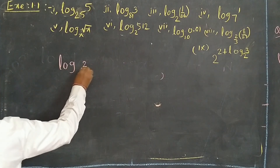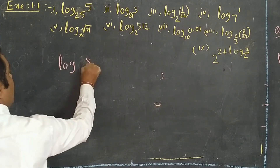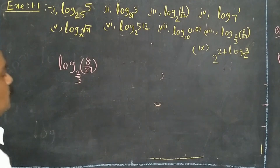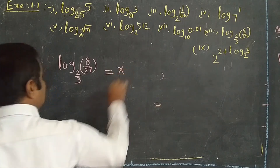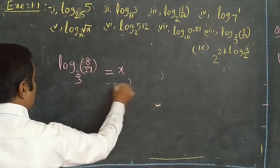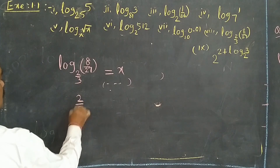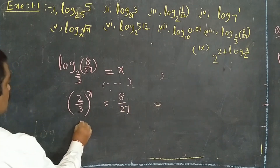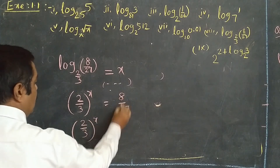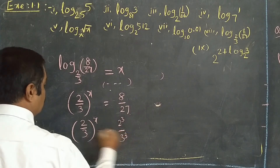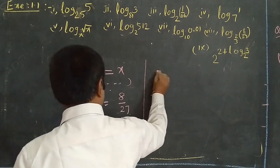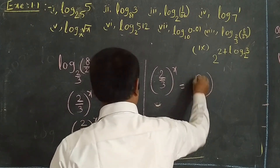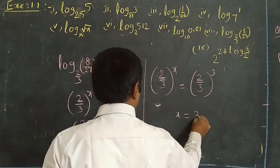Now the eighth question: log(8/27) base(2/3). This is equal to x. Convert to exponential form: (2/3)^x = 8/27. Now 8 means 2³ and 27 means 3³, so 8/27 = (2/3)³. Therefore (2/3)^x = (2/3)^3, so x = 3. This is the method.